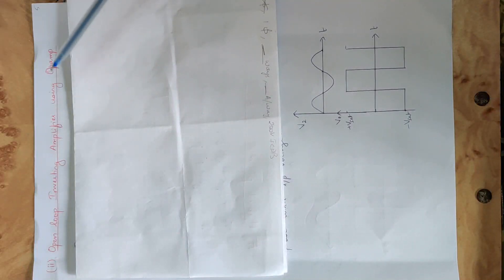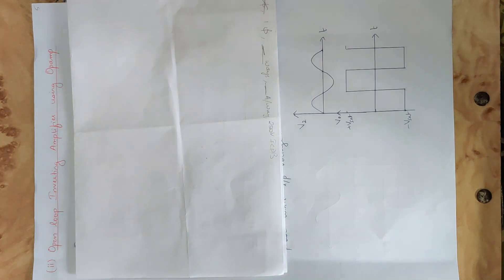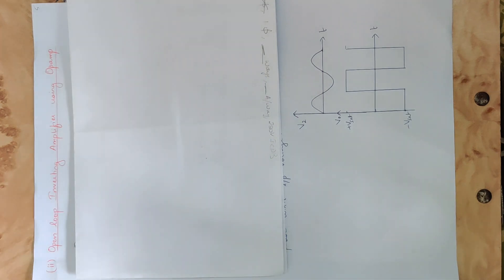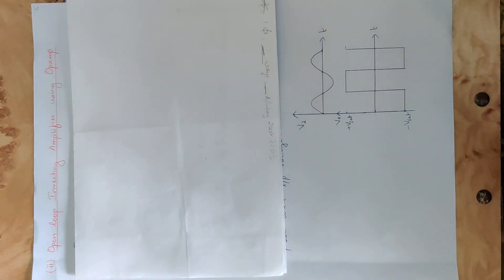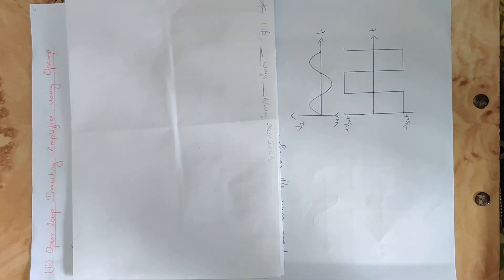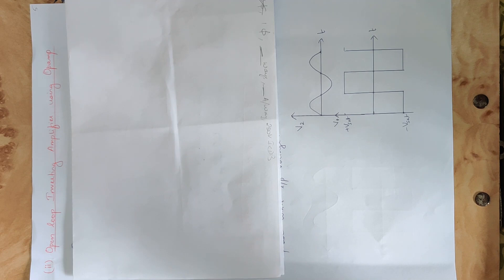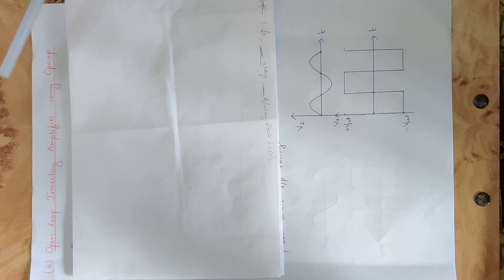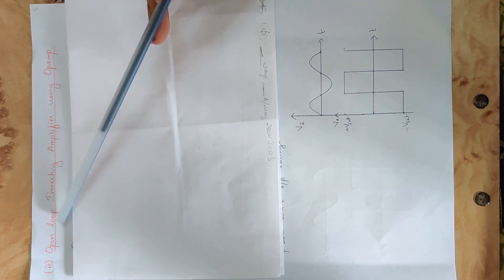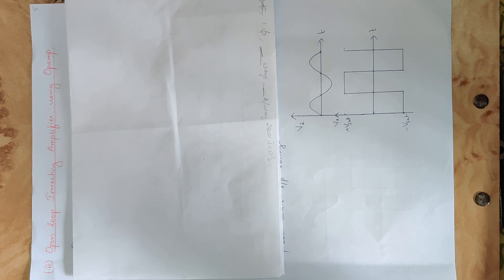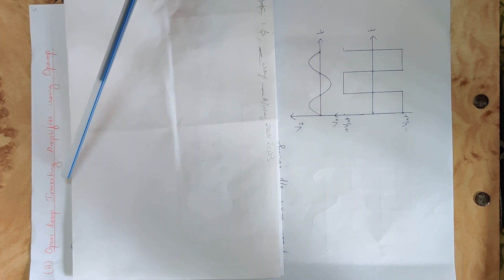Open Loop Inverting Amplifier using Op-Amp. I will tell you the basics and the procedure. The output voltage equation is Vo = A(V1 - V2). Substitute the pin values into the output voltage equation for the Open Loop Inverting Amplifier using Op-Amp.